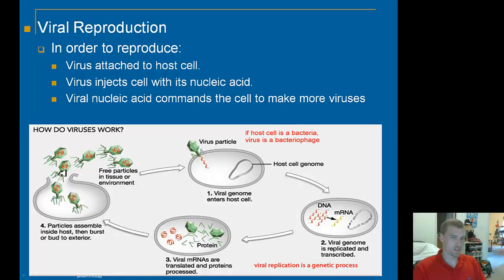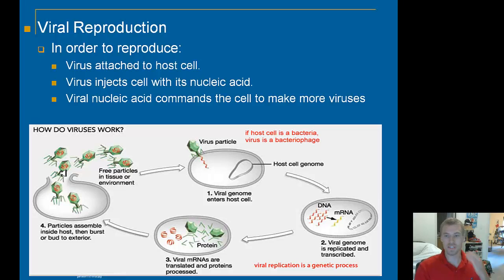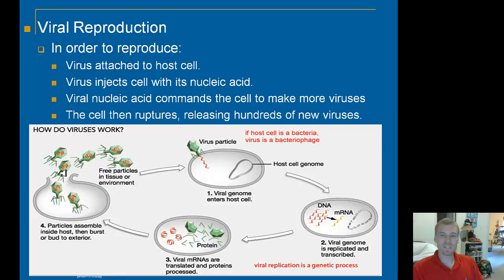There's another type called a lysogenic infection, where the virus takes over the cell but doesn't actually kill it. Every time the cell reproduces, it also produces another virus. That's a slightly different type. After lytic infection, the cell ruptures, releasing hundreds of new viruses that again repeat the cycle.